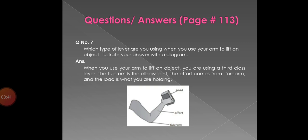Question number 7. Which type of lever are you using when you use your arm to lift an object? Illustrate your answer with a diagram. Answer: when you use your arm to lift an object, you are using a third class lever. The fulcrum is the elbow joint. The effort comes from the forearm and the load is what you are holding. You can see the diagram as well.